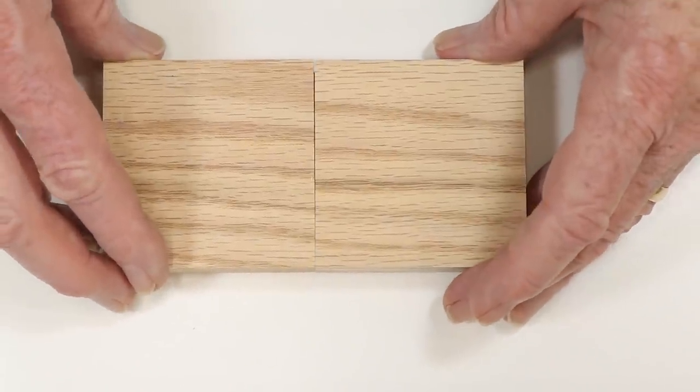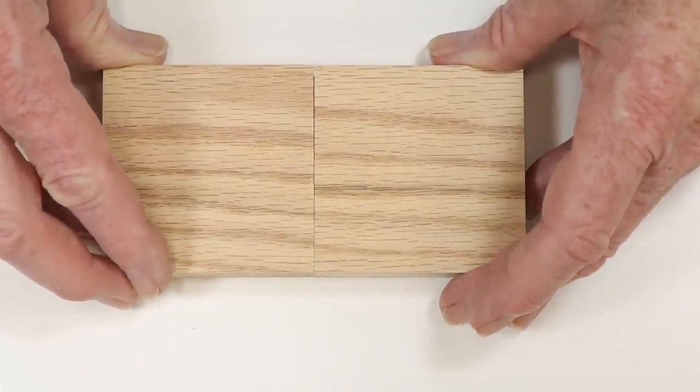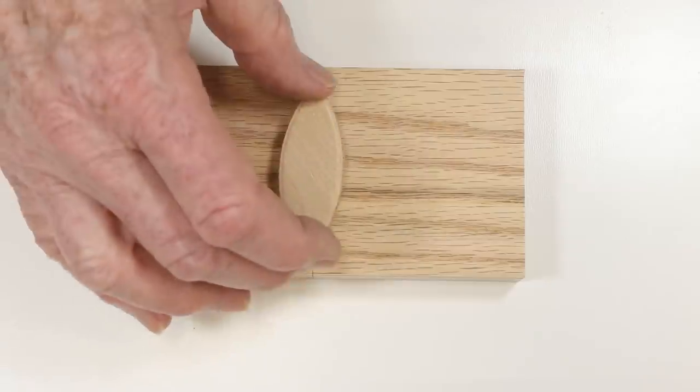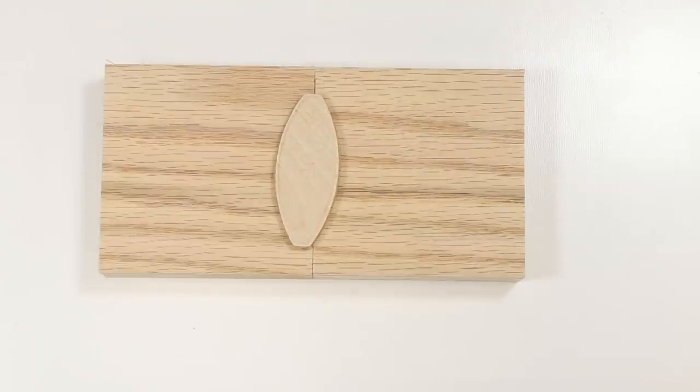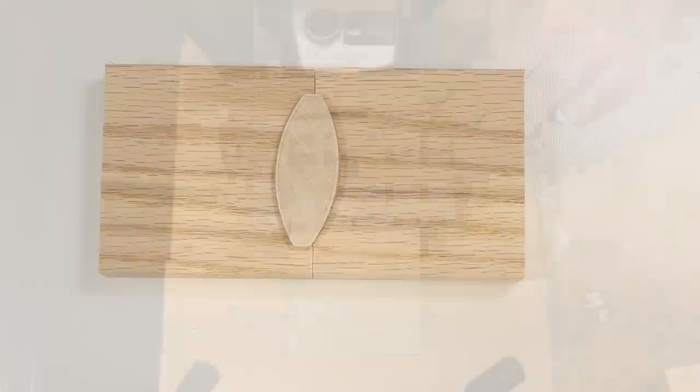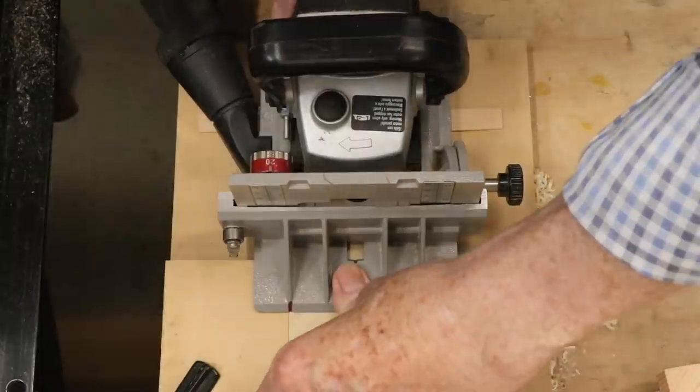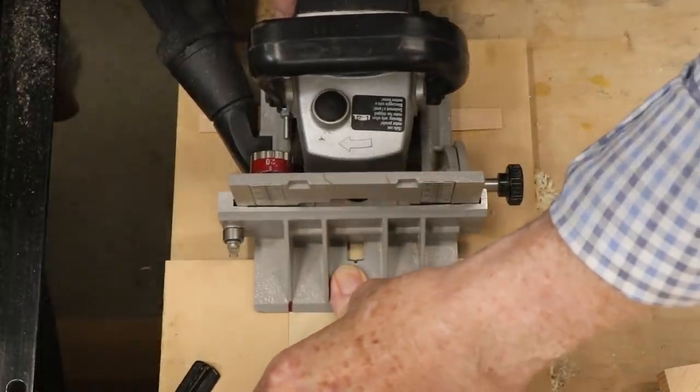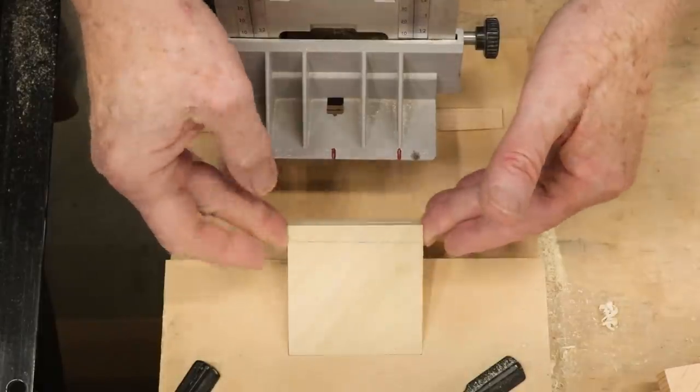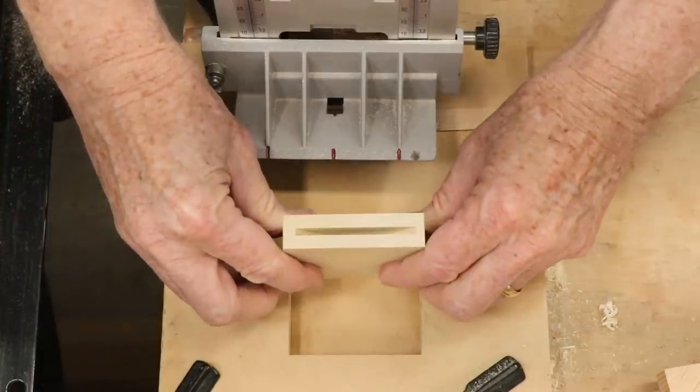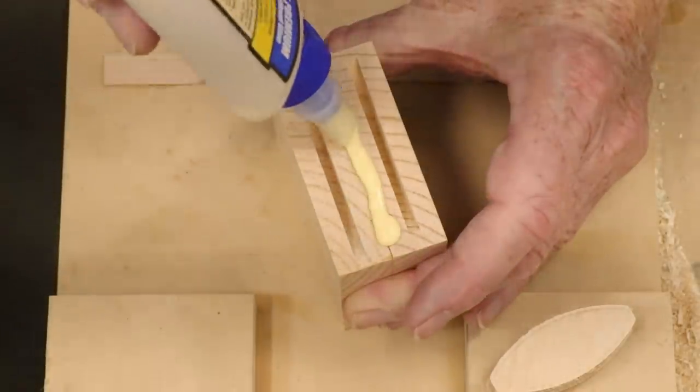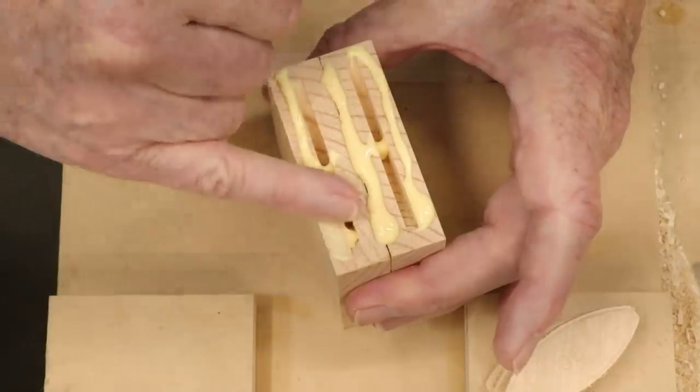I tested biscuits on end-to-end joints first, because that is the one joint which is solely and entirely dependent on the glue's strength. Breaking these joints measures the strength of the biscuit itself and its adhesion to the slot without any other variables to complicate things. I cut slots in three inch or 76 millimeter squares of wood. I used a number 20 biscuit, which is about two and a quarter inches or 56 millimeters long. This pretty well fills the available joint space.